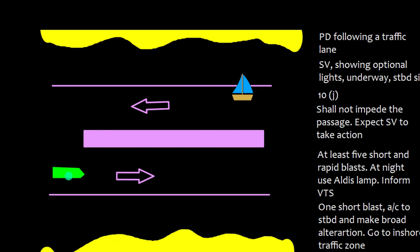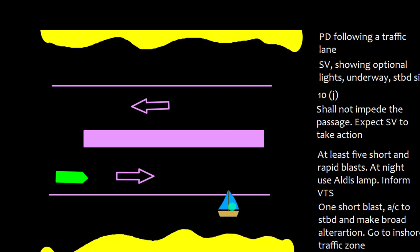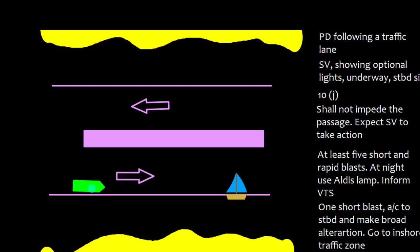If you are a power-driven vessel following a traffic lane and there is a sailing vessel visible on the starboard or port side: Rule 10J says the sailing vessel shall not impede your passage, so you expect the sailing vessel to take action. If it does not, sound at least five short and rapid blasts, use an Aldis lamp at night, and inform VTS. If necessary, give one short blast, alter course to starboard with a broad alteration, and enter the inshore traffic zone.